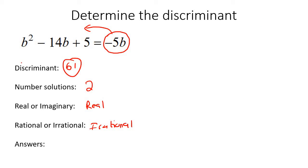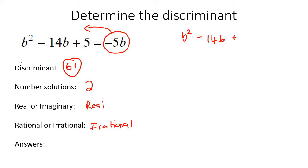Now we're actually going to go and solve this equation — and yes, finding the discriminant is not the same as solving. The discriminant tells us about the answers but doesn't tell us what they are. Also, you could try to factorize, but it's not going to work. You can only factorize when the answers are rational. When they're irrational, we use the quadratic formula instead.